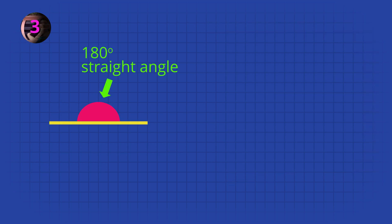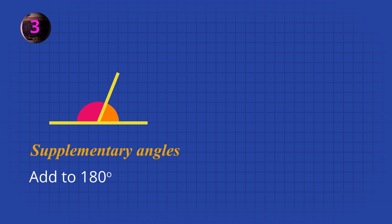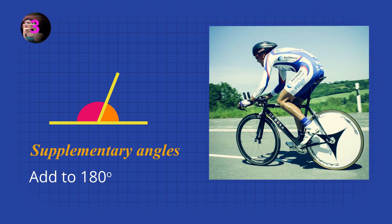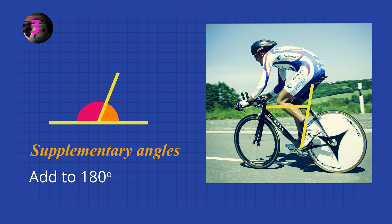A straight line is 180 degrees. If we divide the straight line into two angles, these angles must add up to 180 degrees. These are called supplementary angles. In this bicycle frame, if one angle is 100 degrees, the other angle must be 80 degrees.